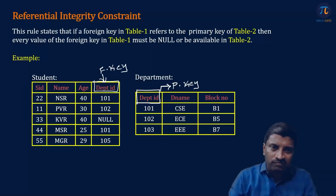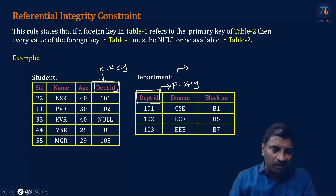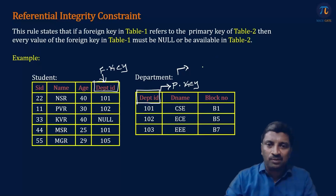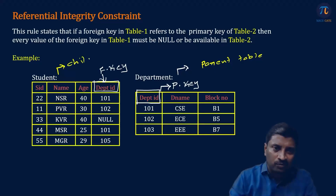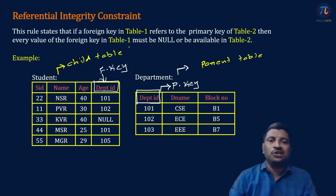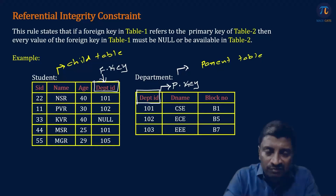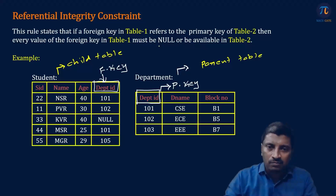So this department ID is used by another table. In such cases, we will call this attribute a foreign key. The relation in which the primary key is present is called parent table or referred table. And the relation in which the foreign key is present is called child table. Now what the rule says is: every value of the foreign key either must be null or it should be available in the parent table.